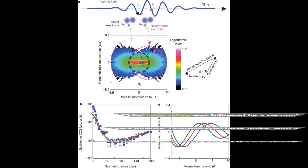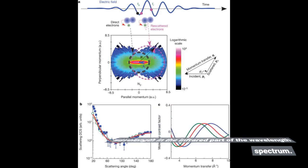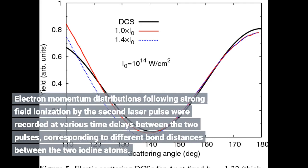This laser pulse was followed by a second, very intense, time-delayed laser pulse with a wavelength in the infrared part of the wavelength spectrum. Electron-momentum distributions following strong field ionization by the second laser pulse were recorded at various time delays between the two pulses, corresponding to different bond distances between the two iodine atoms.